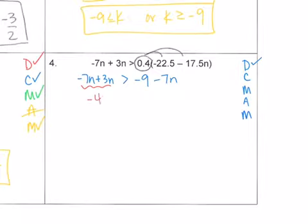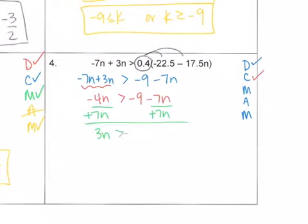Combine my like terms. I have variables on both sides, so I'm going to move the smaller one. I don't have anything to add or subtract, so I just divide. n is greater than negative 3.